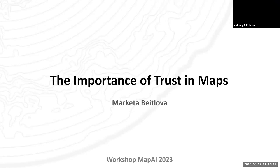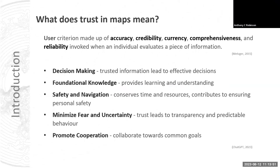My name is Marketa Vajtlova. I'm from Czechia, from the Stanislav Popelka group. Today I would like to talk about the importance of trust in maps. Trust is an important factor for human communication, and it's based on users' criteria like accuracy, credibility, currency, comprehensiveness, and reliability. In our field, it's important for decision-making, foundation knowledge, safety navigation, minimizing fear and uncertainty, and promoting cooperation.